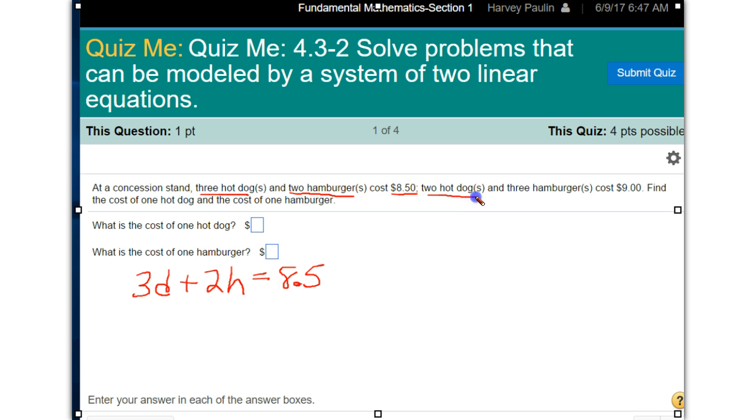Now two hot dogs, two hot dogs plus three hamburgers costs $9. So there are your two equations.